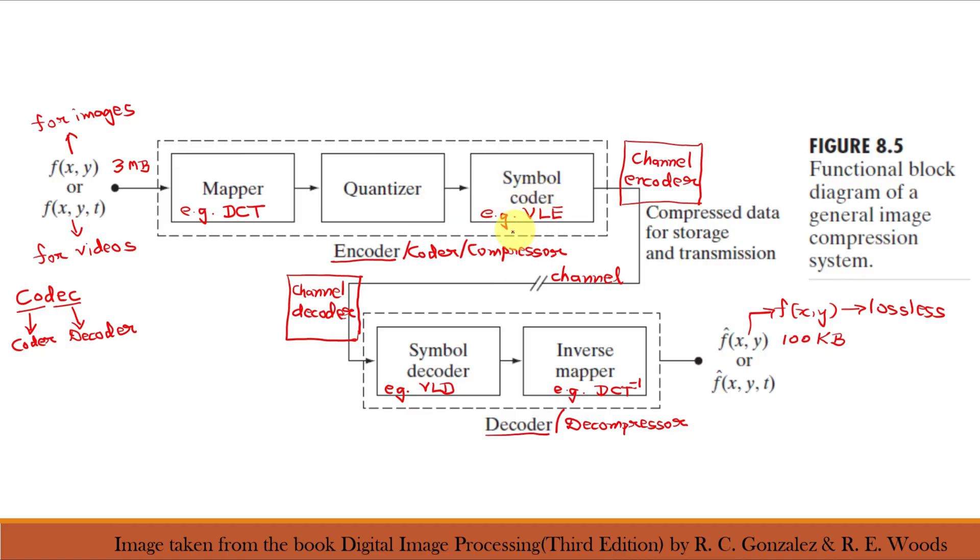In most cases, a variable length code assigns the shortest code to the most frequently occurring output values and thus reduces coding redundancy. And this operation is obviously reversible. Upon completion of the symbol coding step, the input image has been processed to remove each of the three redundancies.